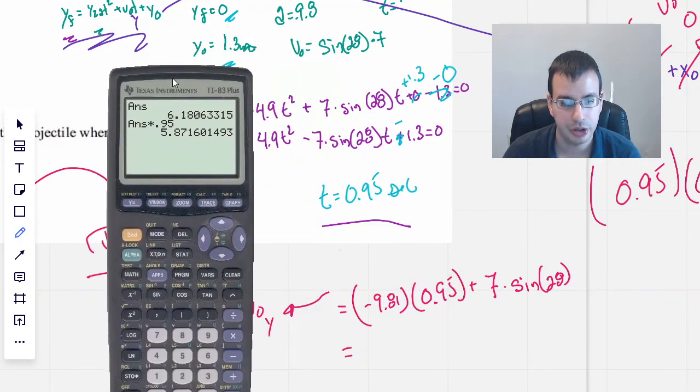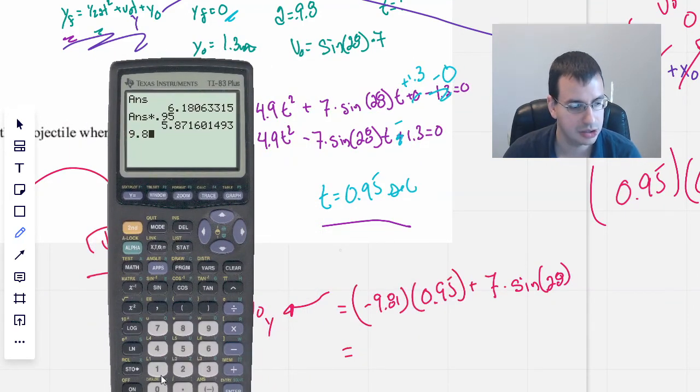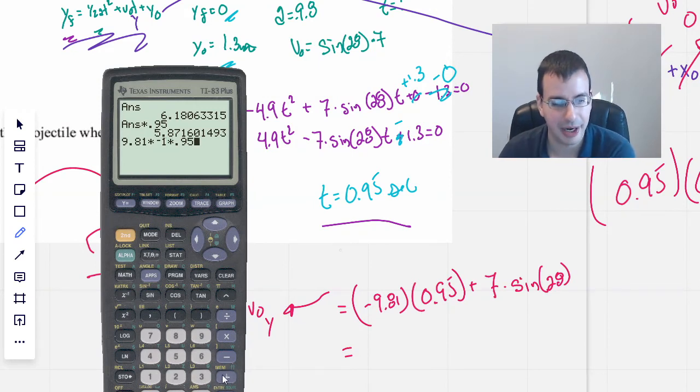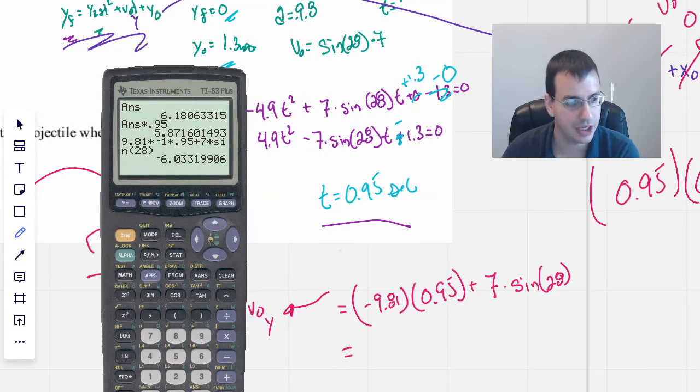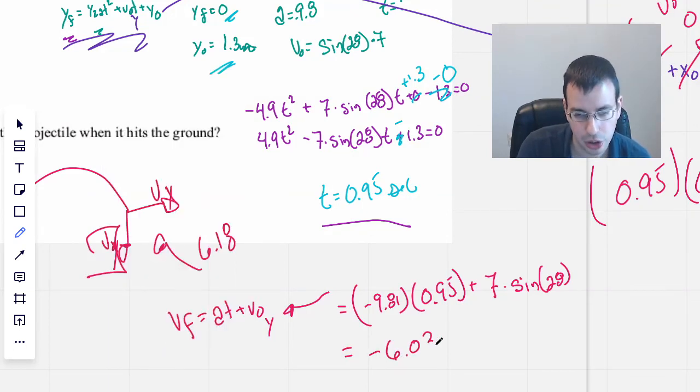But we need to find the y one. We're going to use our kinematic equation for that. So we're going to do v final equals at plus v naught, where this is v naught y. So we're going to rewrite this as acceleration is negative 9.81 or 9.8, which is fine, times 0.95 is going to be the time, plus we're going to have the 7 times sine of 28 degrees. And it gives us negative 6.03.